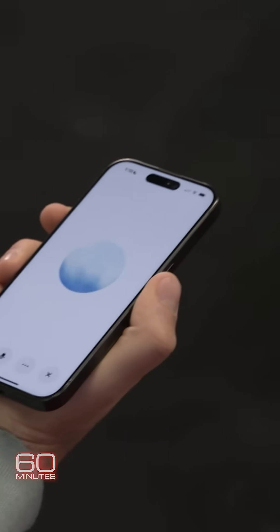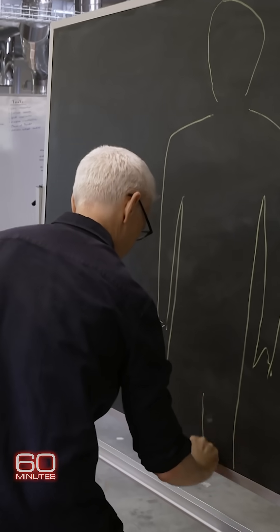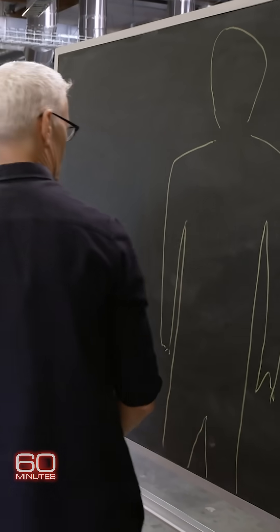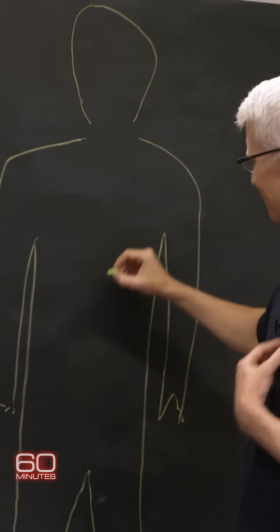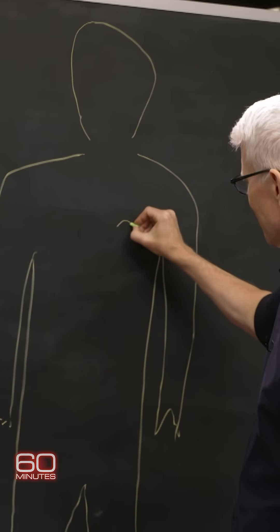That sounds like a fantastic plan. When Brockman pointed his phone's camera at the blackboard, the AI started to quiz me. Let's start with the heart. Anderson, can you draw and label where the heart is in the body?